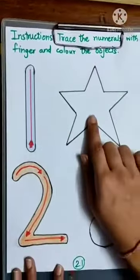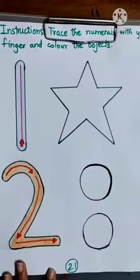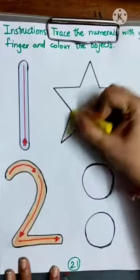Now, we have 1 star. So, we have to color it. I am taking yellow crayon to color the star.